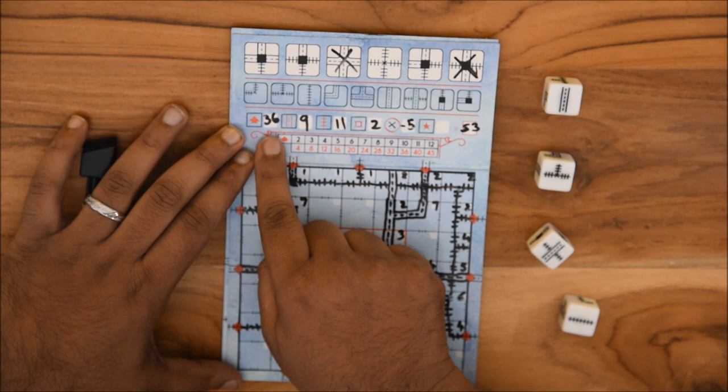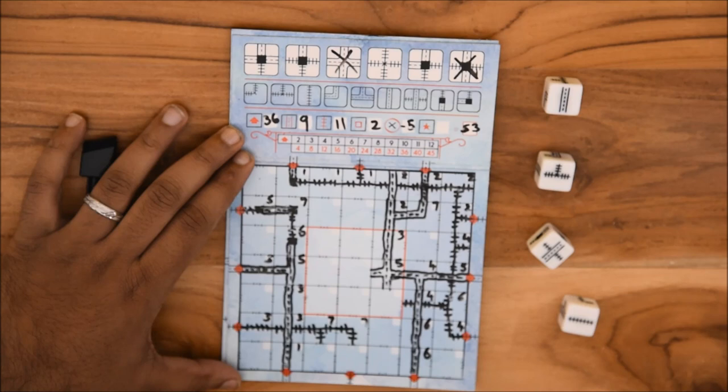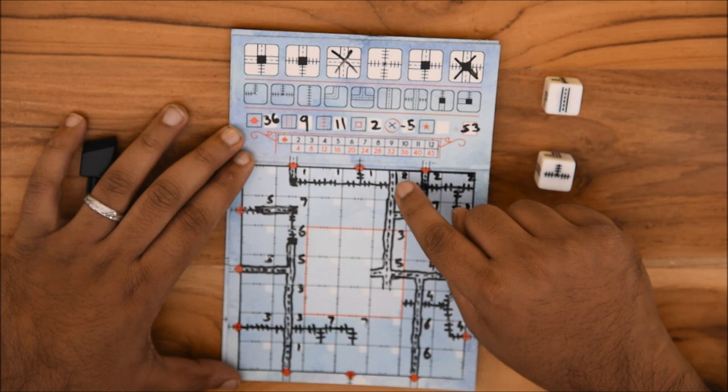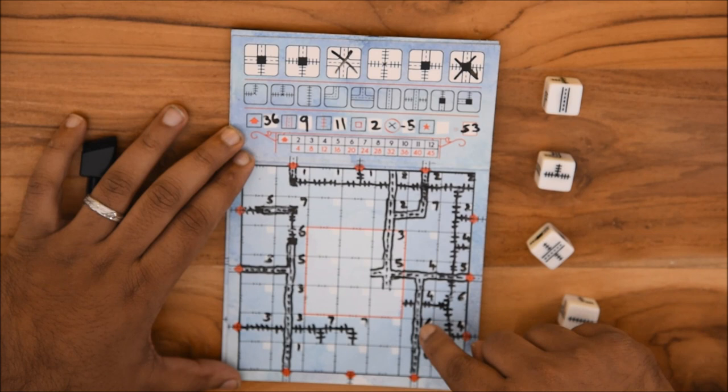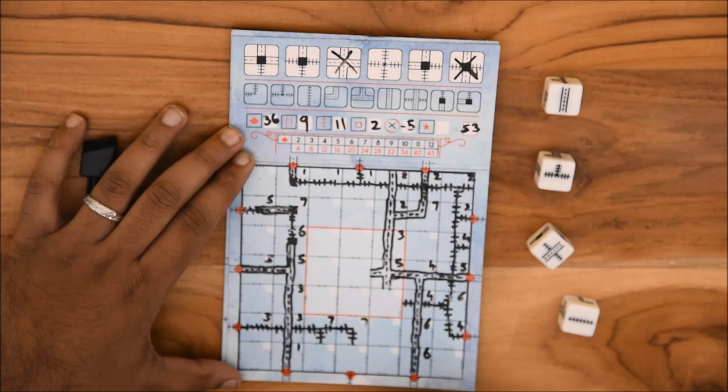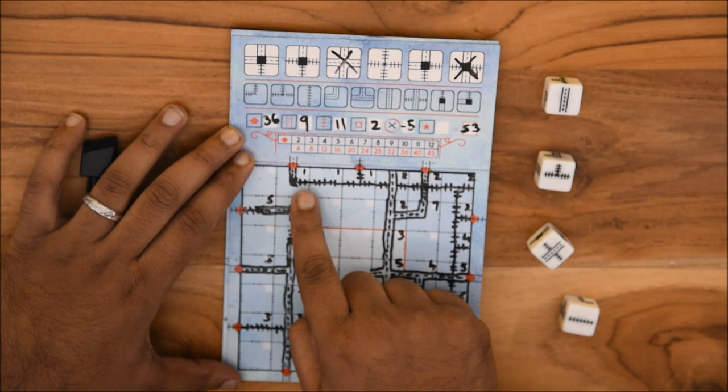The next component assigns points for the longest stretch of connected highway on your player sheet. To get this value, count the number of squares traversed by the longest stretch of highway you have constructed. Any junctions that connect to highway on both sides do not interrupt your count. This provides you your longest highway score and you can enter this into the next box on the scoring guide. Repeat this process with railroads for your longest railroad score and enter that into the third box in the scoring guide.